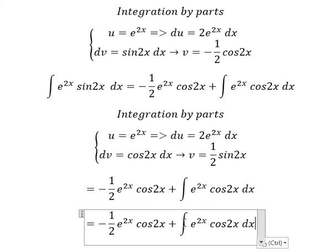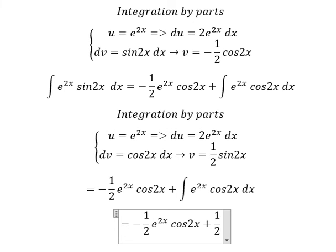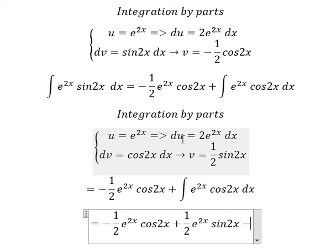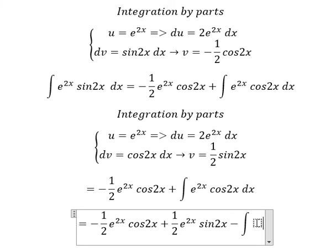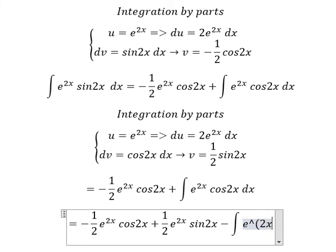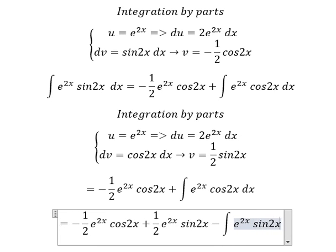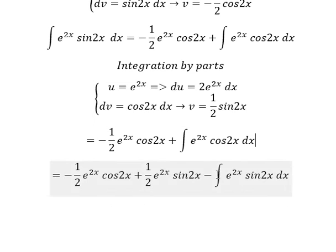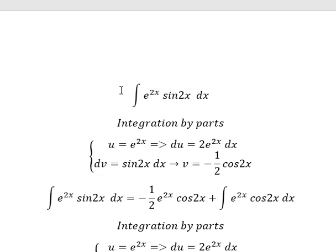And we know that this one is u multiplied by v minus du multiplied by v. So we have the integral e to the power of 2x cos 2x dx. Now we know that this one is equal to this one.